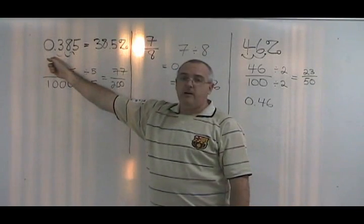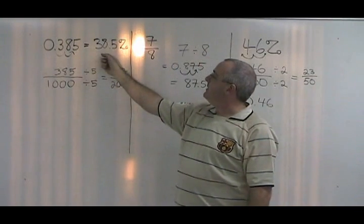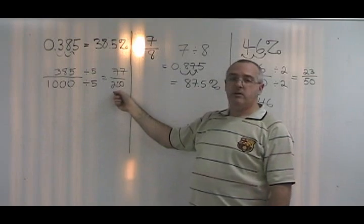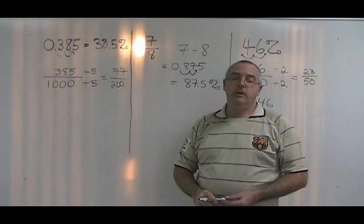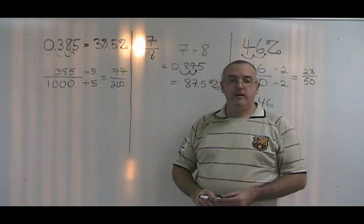0.385 is equal to 38.5%, which is equal to 77 over 200. No matter what we are given—a fraction, decimal, or percent—we can convert it into either of the others.